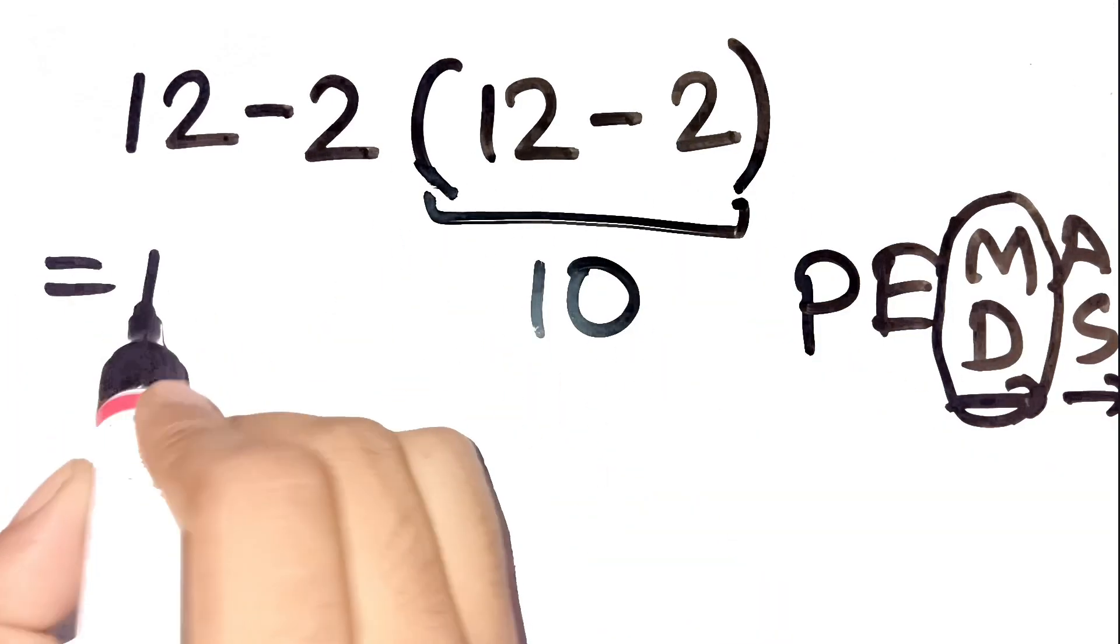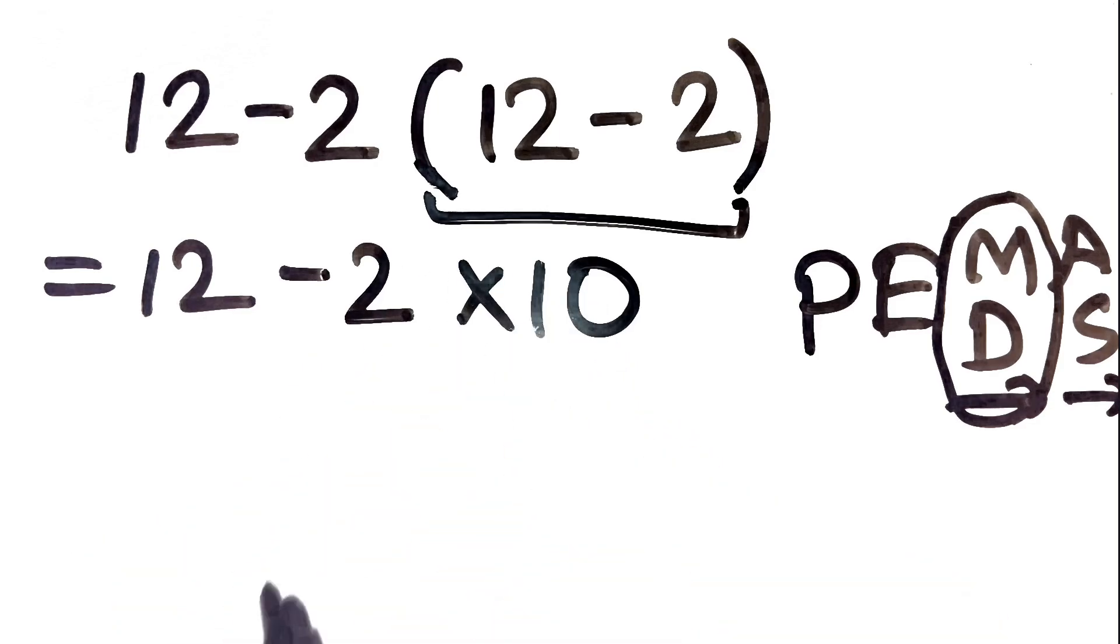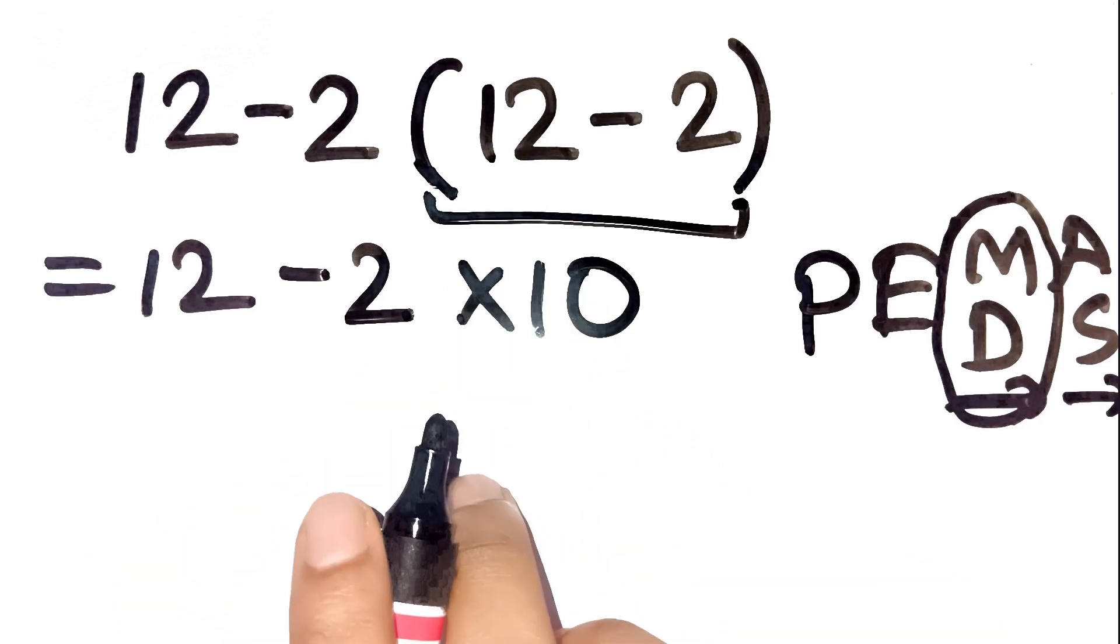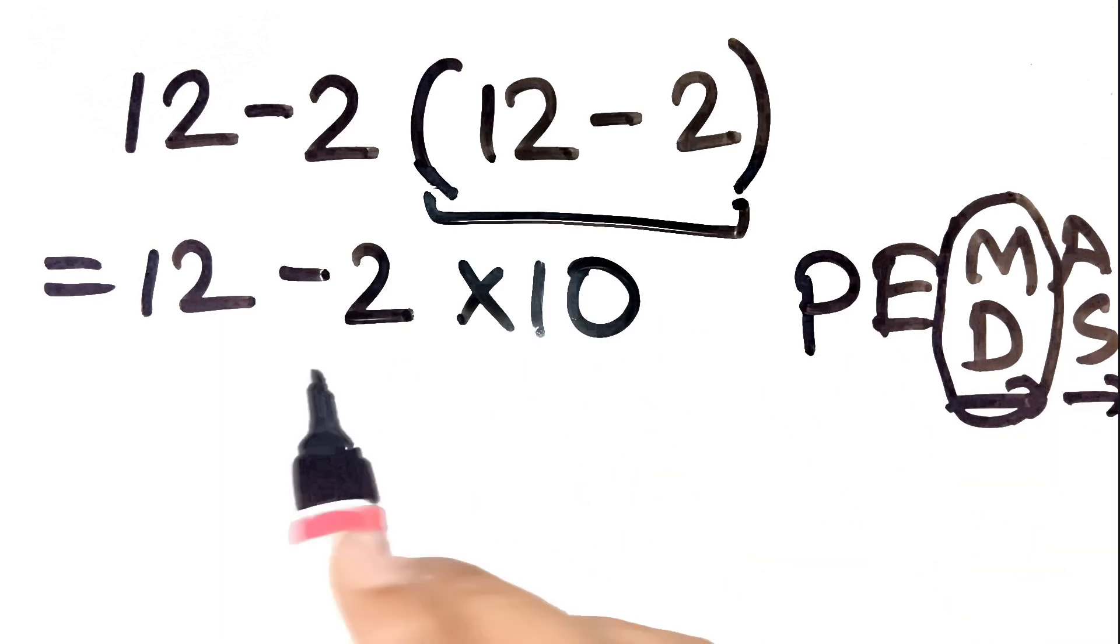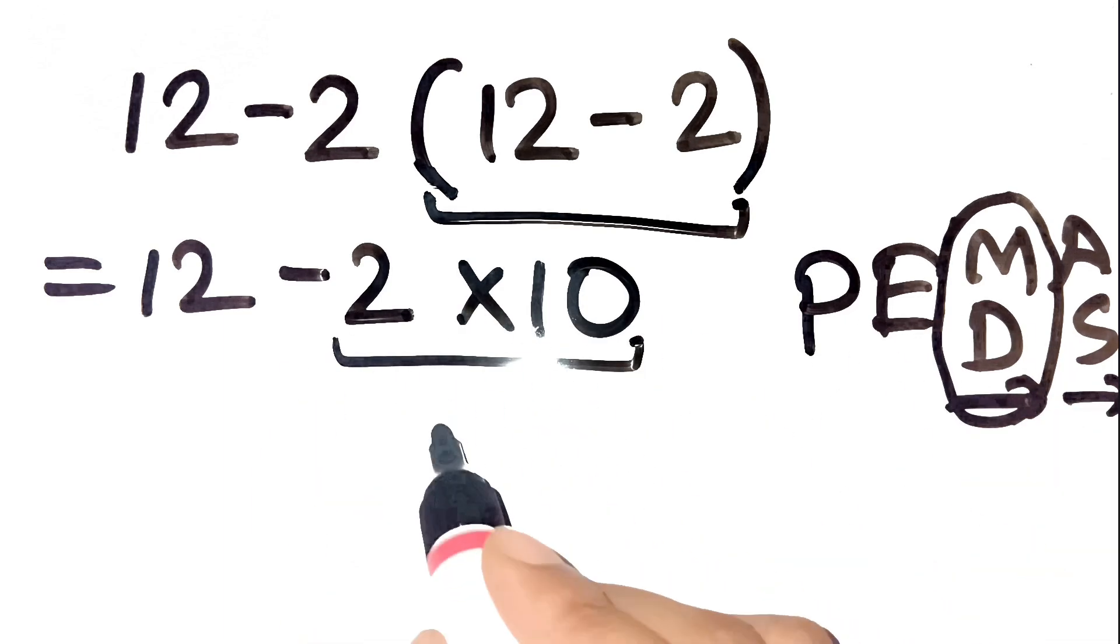Now the problem looks like 12 minus 2 times 10. Step 2: Multiplication and division come next, left to right. So, we do 2 times 10 first, which is 20.